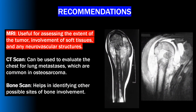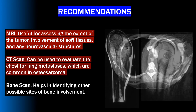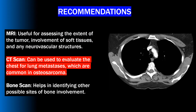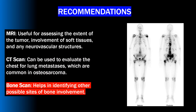MRI is useful for assessing the extent of the tumor, its involvement of soft tissues, or any neurovascular structures. CT scans can be used to evaluate the chest for lung metastasis, which are common with osteosarcomas. Bone scans or bone scintigraphy can help identify other possible areas of skeletal involvement.